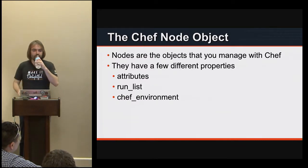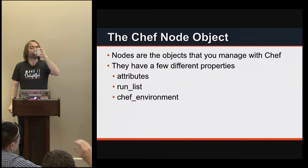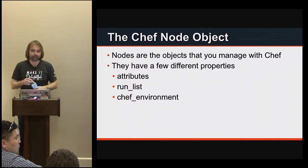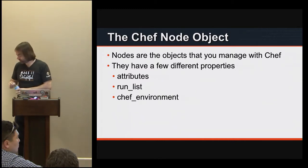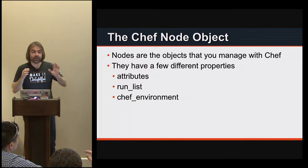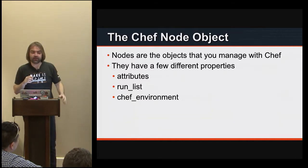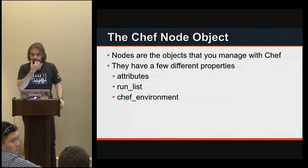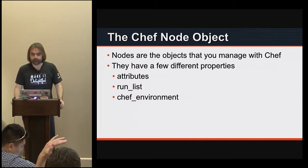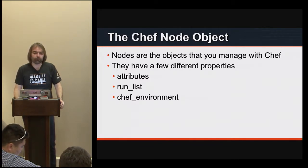So the environment you had up earlier with a load balancer, an app stack, an API system, and a database system — that whole environment would be one Chef environment, and you could have additional things inside of that environment as well. The differences between nodes are specified via the run list. Okay, thank you.